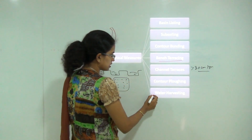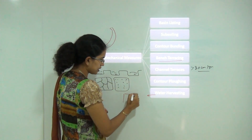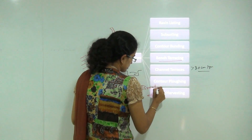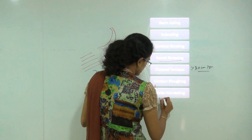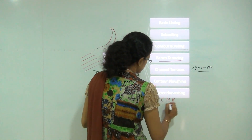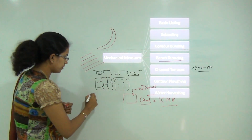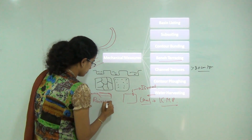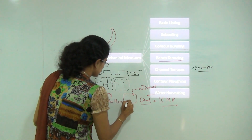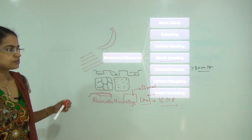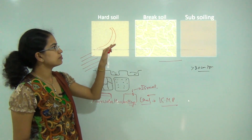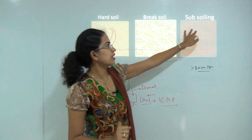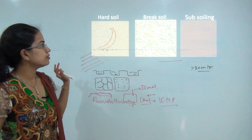Finally there are water harvesting techniques, including drip irrigation — drop-by-drop irrigation, which is a common practice in Israel — canal irrigation, as seen in the Indira Gandhi Nahar Pariyojana in Rajasthan, overhead water tanks at the top of houses, and rainwater harvesting. These water harvesting and management techniques help to improve soil erosion. An example of subsoiling is shown: hard rock is broken down and subsoiling takes place. These are the mechanical measures discussed.